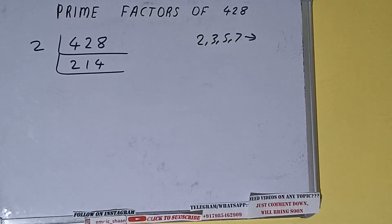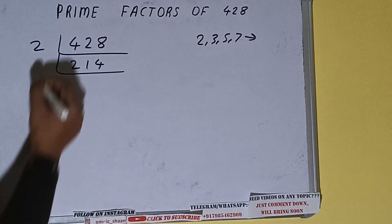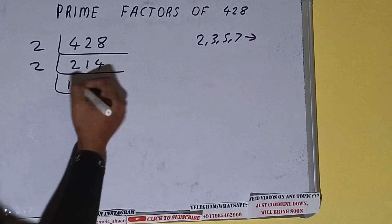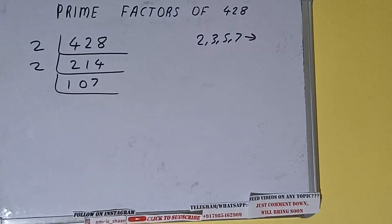Now is this 214 further divisible by 2? Yes it is, because the number is still even, and we'll be having 107. Now is this 107 further divisible by 2? The answer is no, because the number is odd, and 107 is also a prime number.